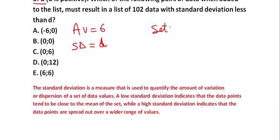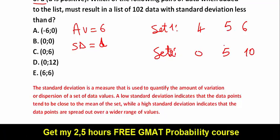For example, let's say set 1 contains those elements and set 2. Here is set 2: 0, 5, 10. The mean in set 1 and in set 2 is equal to 5.